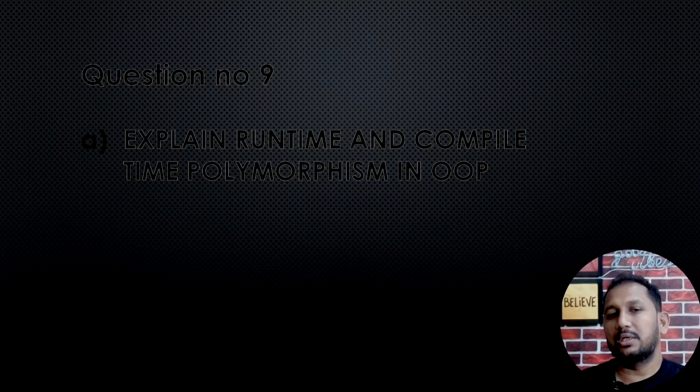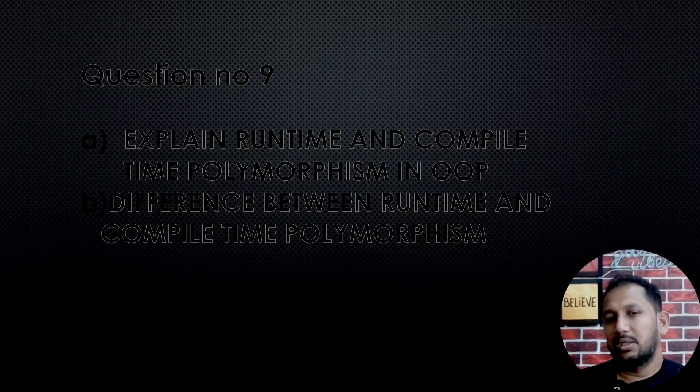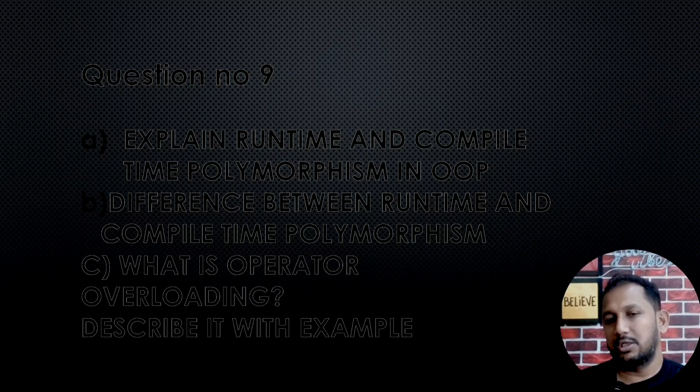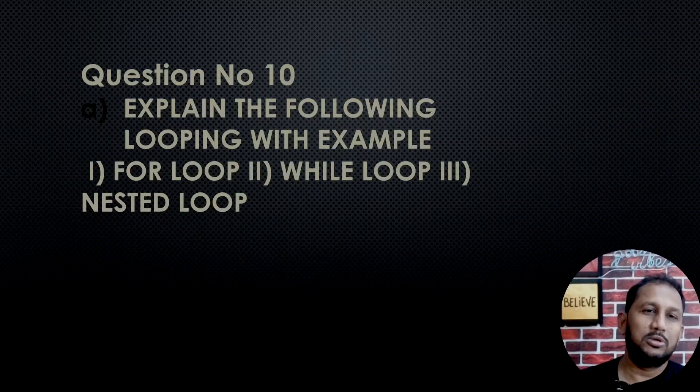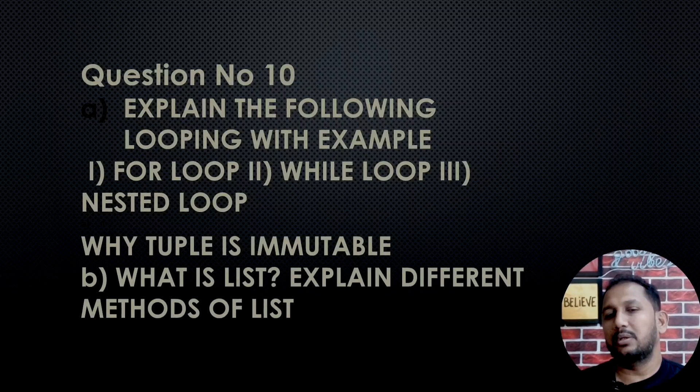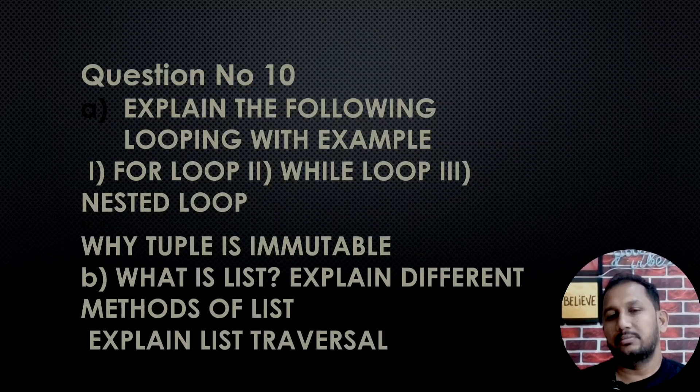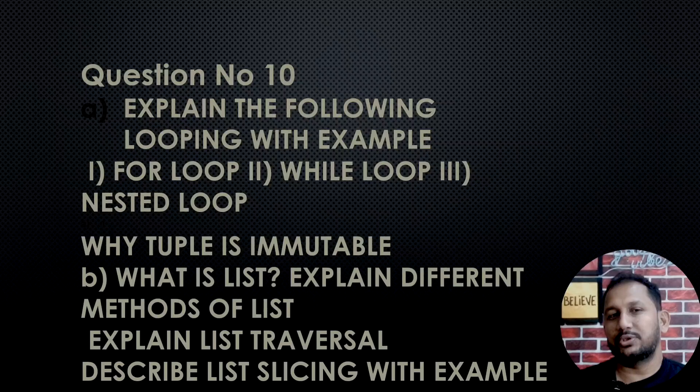Question number 9: Explain runtime and compile-time polymorphism with example. Difference between runtime and compile-time polymorphism. What is operator overloading with example? Question number 10: Explain the following looping with examples - for loop short note, the concept, features and examples, while loop, nested loop. Why tuple is immutable? What is list? Explain different methods of list - must question. Explain list traversal and describe list slicing.